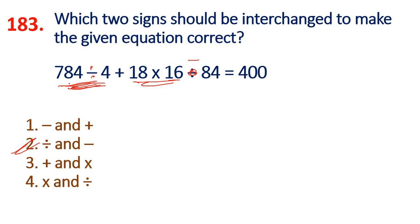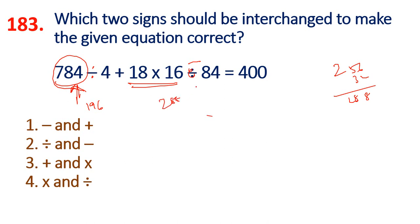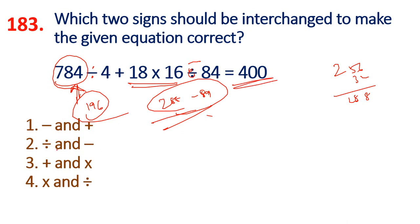4 divided by 4 and 4 and 9. 99 is 32, so we divide. 3 times and 4 gives 256 and 32. 256 plus 32 is 288. 288 minus 84 is 204. 204 plus 196 is 400. So option 2 is the answer.